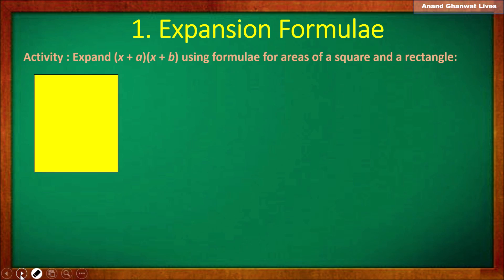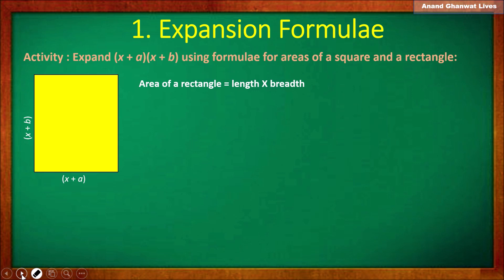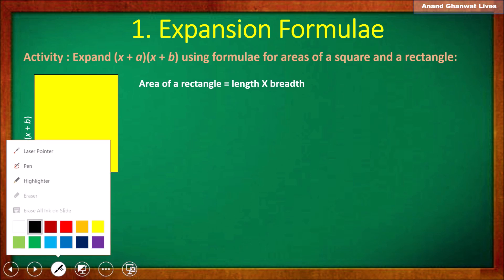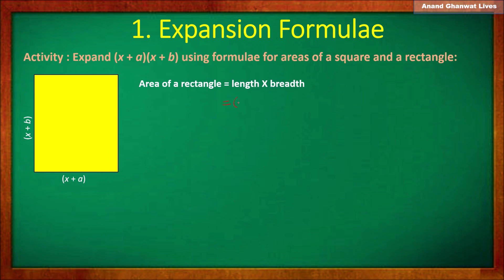Take a rectangle with length (x + a) and breadth (x + b). The length of this rectangle is equal to (x + a) and the breadth of the rectangle is (x + b). Therefore, the area of the rectangle is (x + a) into (x + b).